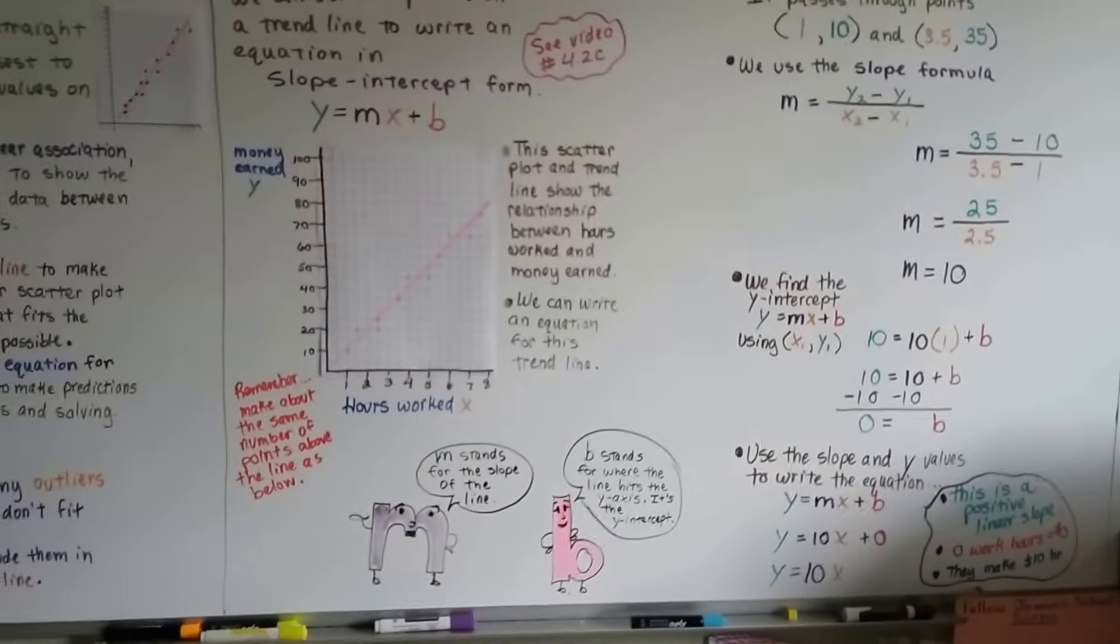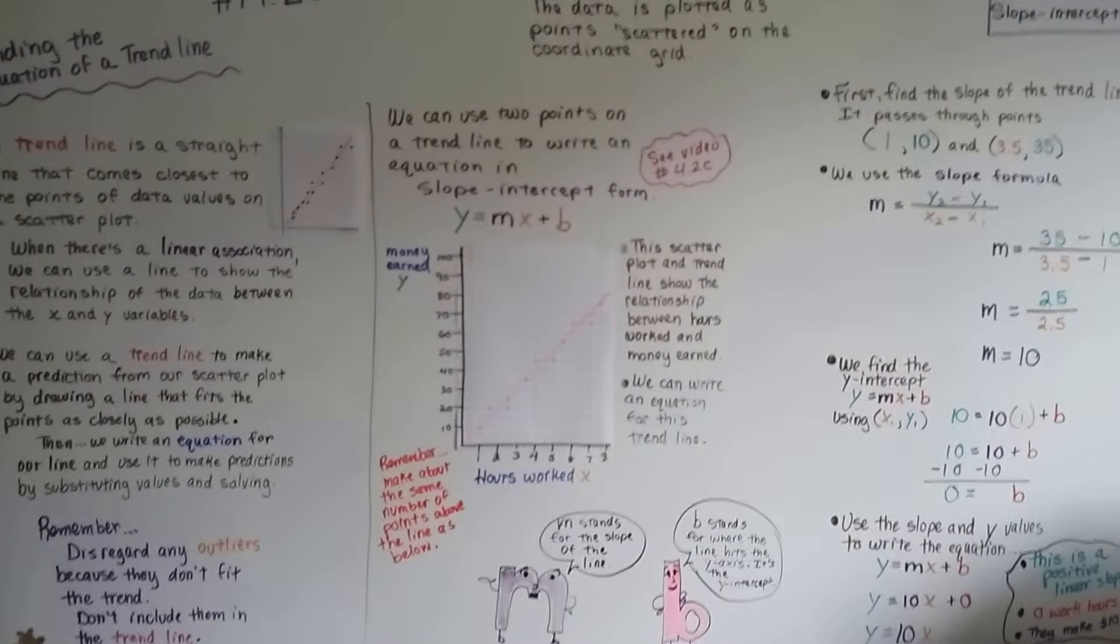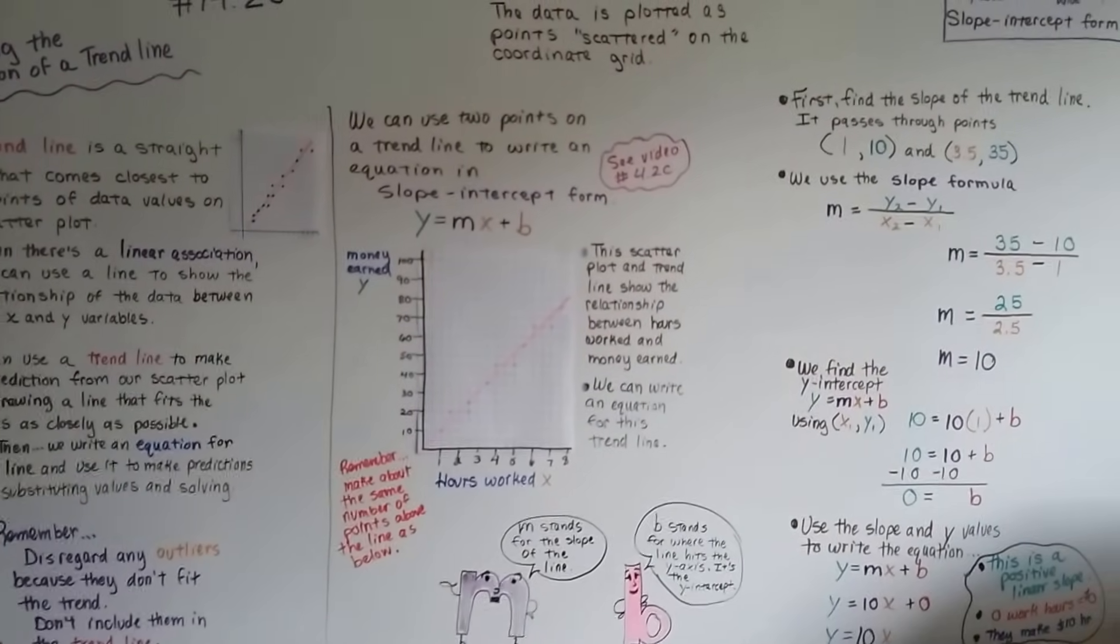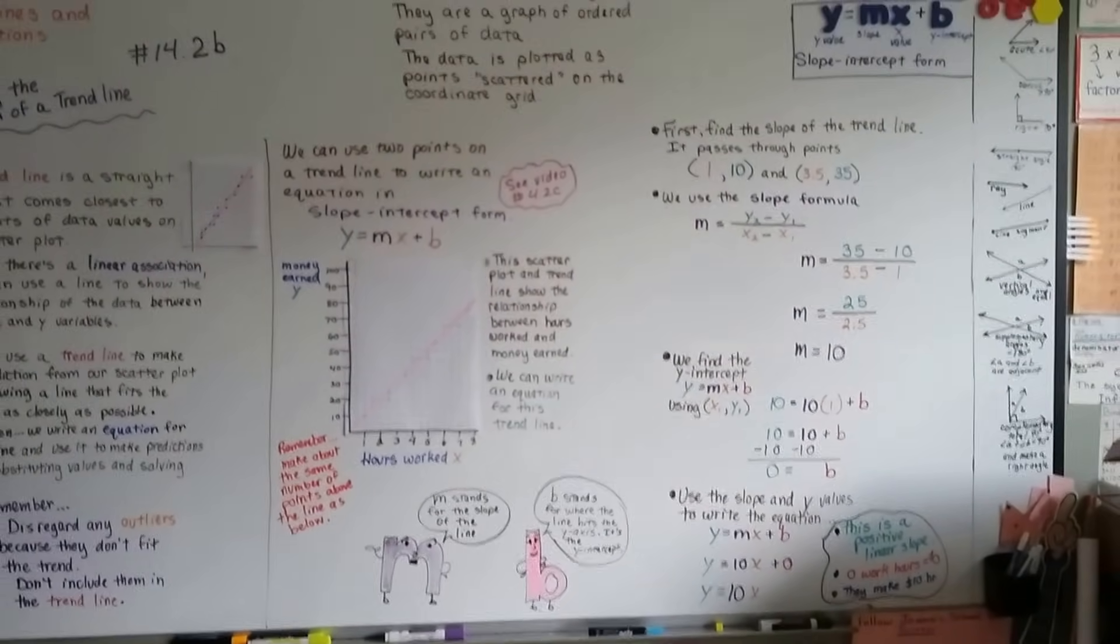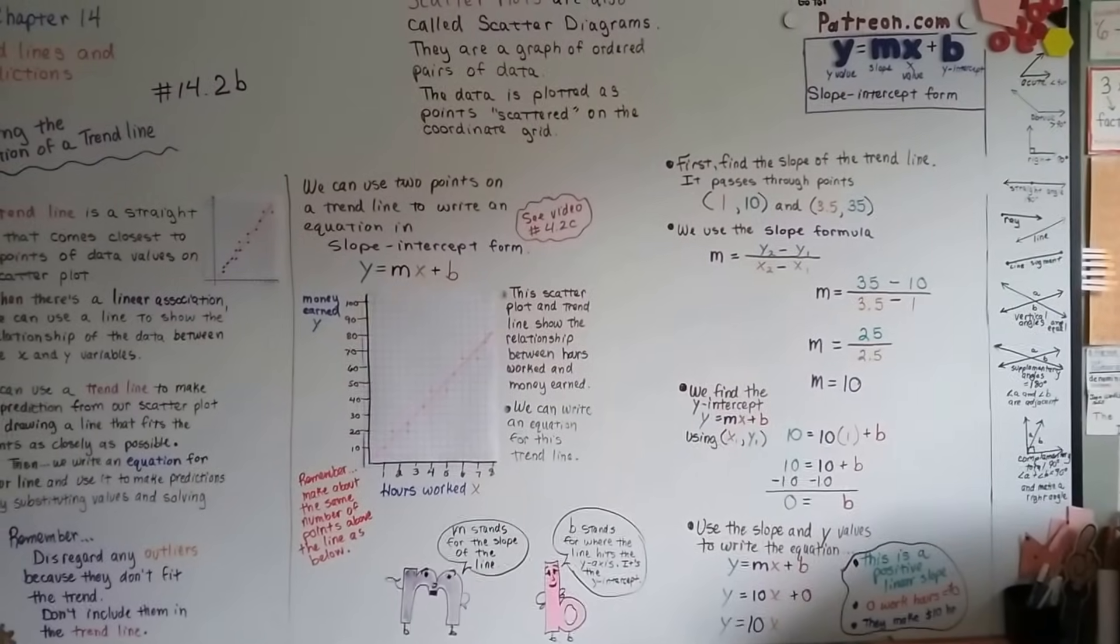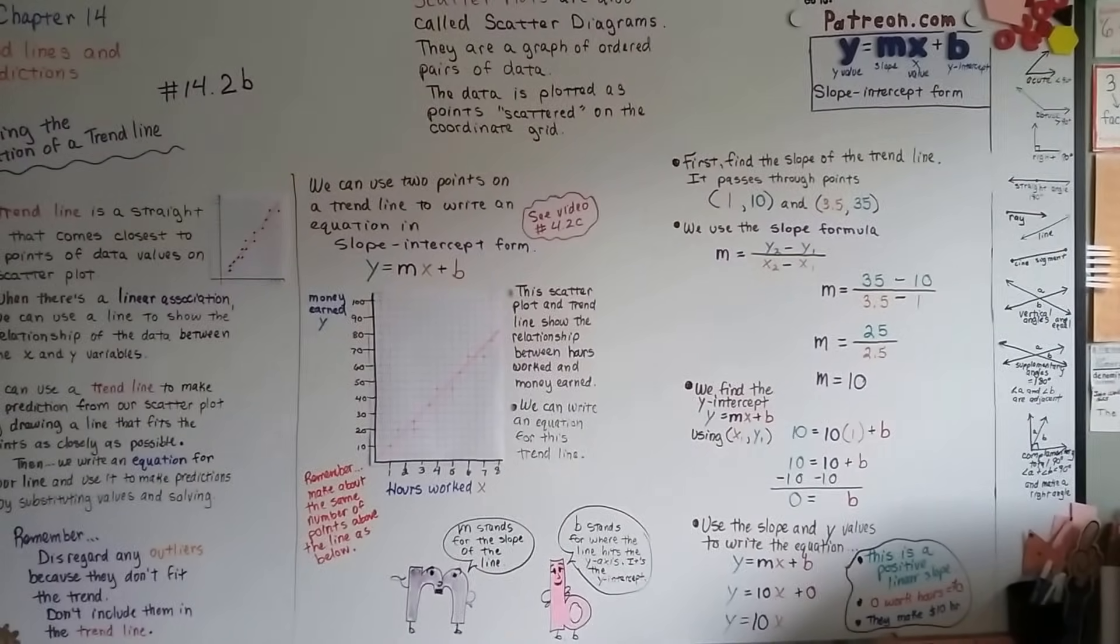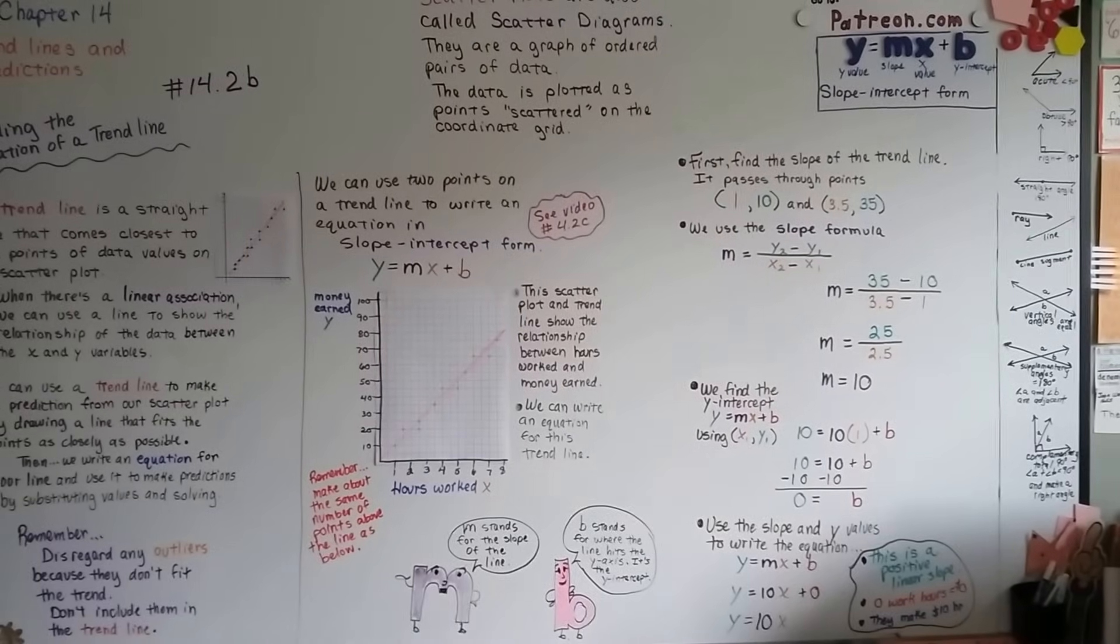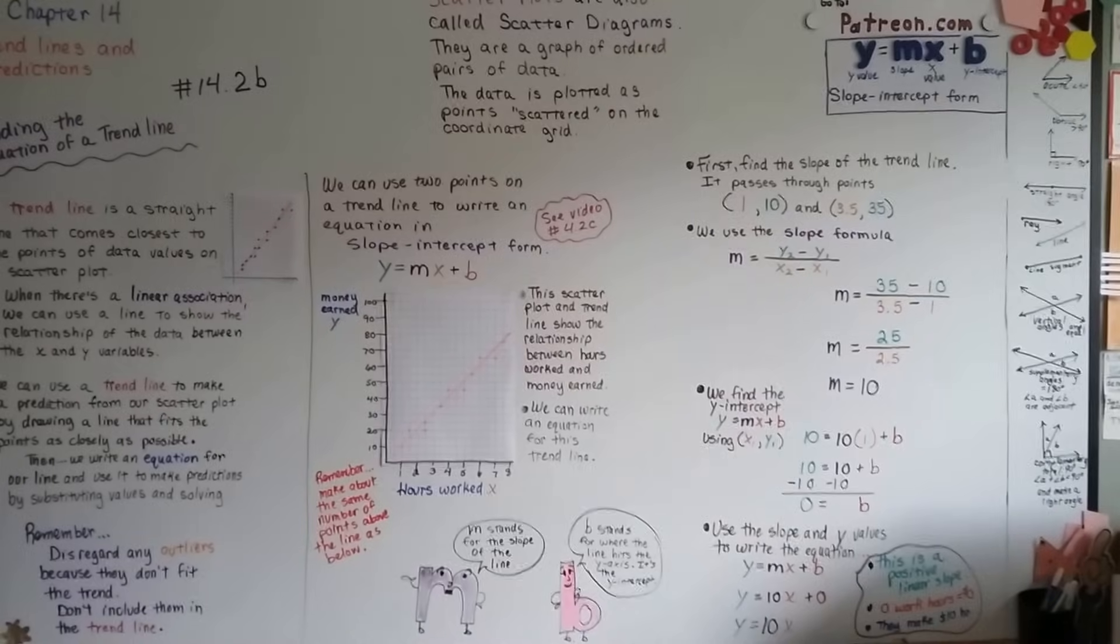So, that's how we find the equation of a trend line. I'm going to talk about making predictions in 14.2c. We're slowly getting through this. We're almost finished with chapter 14. And, we only have chapter 15 left after this. And, we're finished with 8th grade math. Got about 8 to 10 more videos. And, we're done. We're getting there. Keep trying. I believe in you. We'll get through this. Bye.